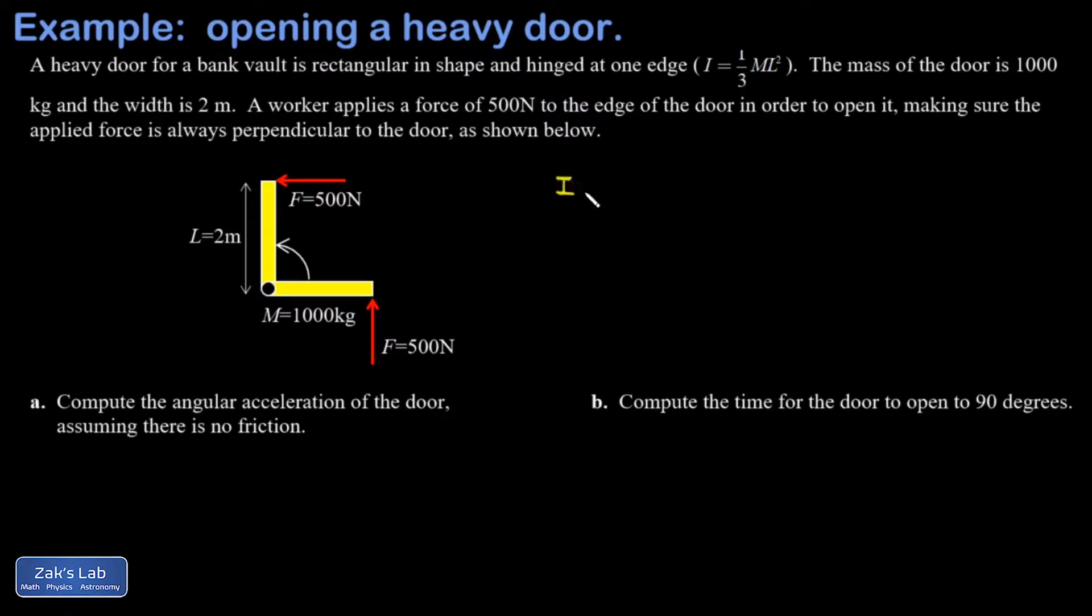It's the same as the moment of inertia for rotating a rod about one of its ends. It doesn't matter that it's a slab extended into a third dimension because the mass distribution is the same in terms of how much mass is from the rotation axis.